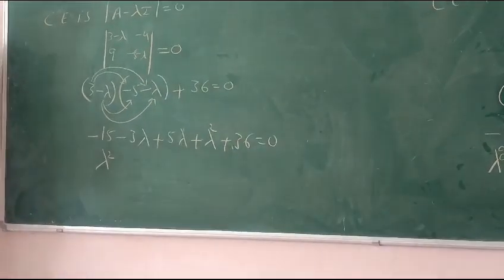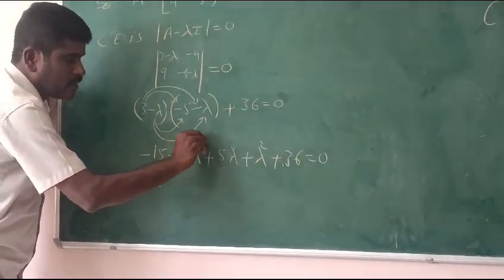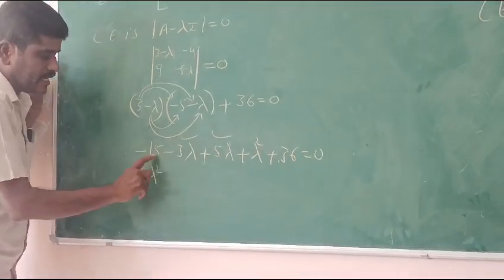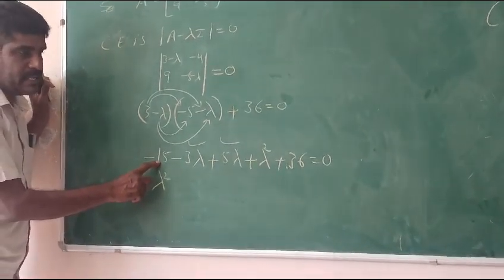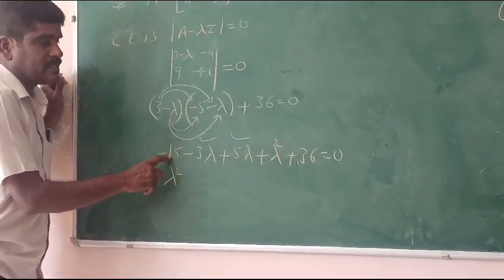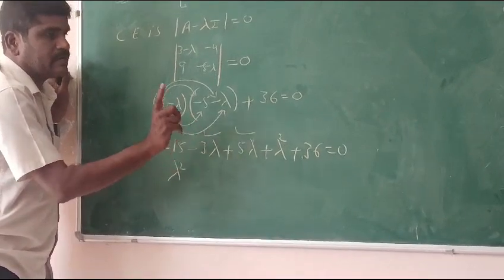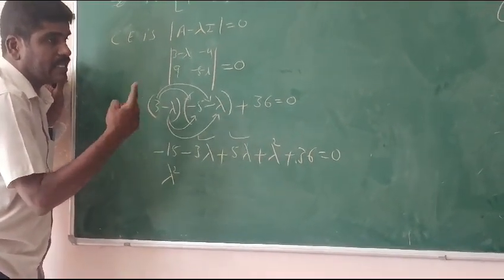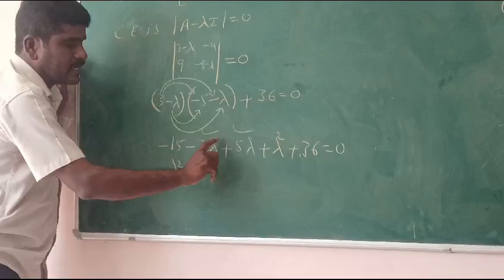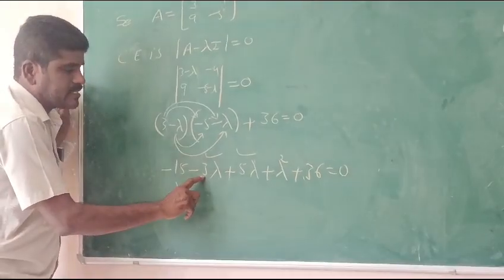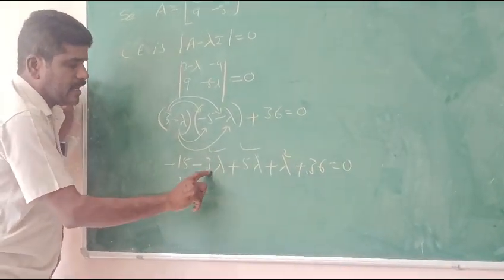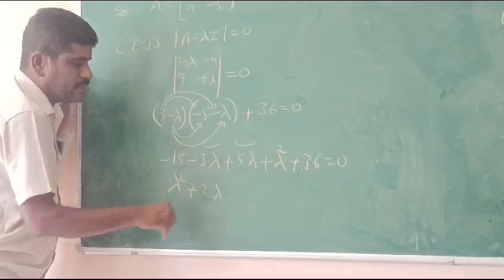Lambda squared, minus lambda into minus 5, plus 2 lambda.